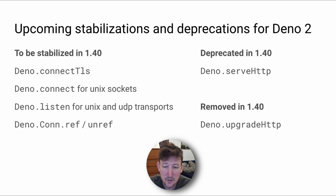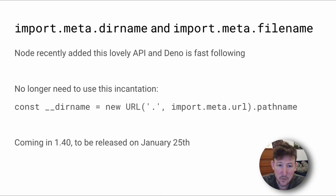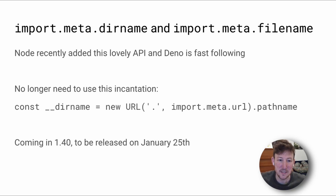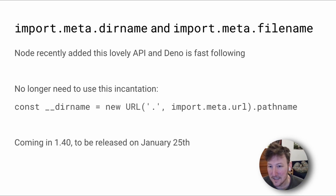Node recently added import.meta.dirname and import.meta.filename as ESM-friendly alternatives to __dirname and __filename. We really like this API too, and are implementing it for 1.40, which will be released on January 25th. This will negate the need to remember incantations like new URL('.', import.meta.url).pathname in order to get the dirname of the current file.